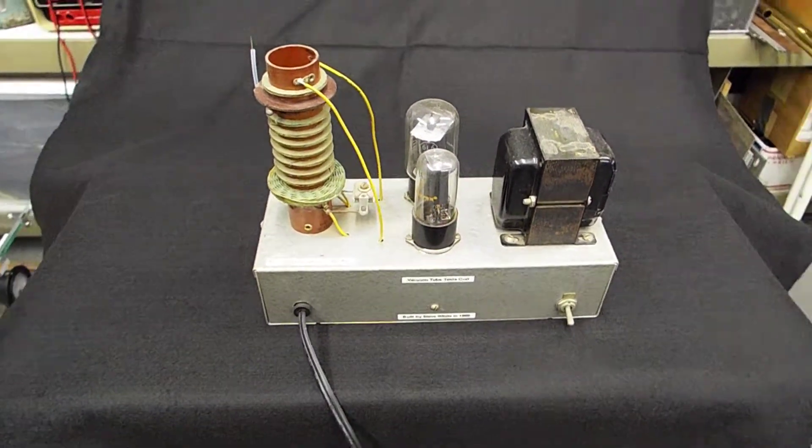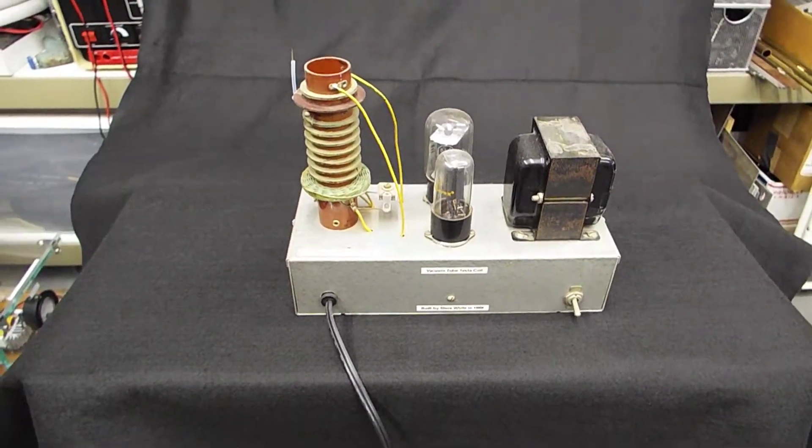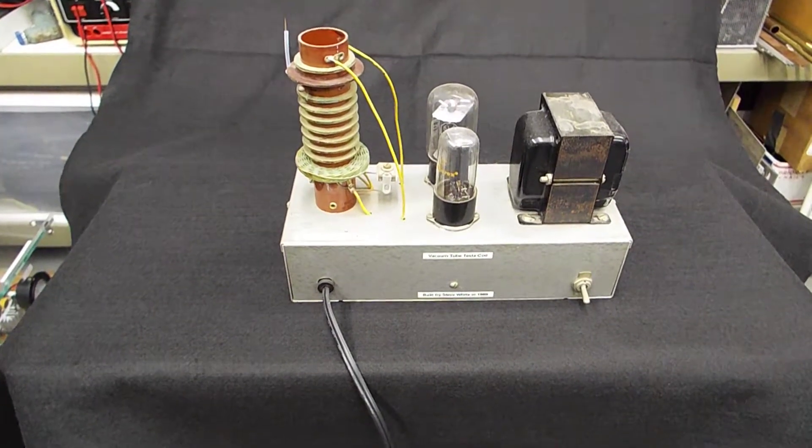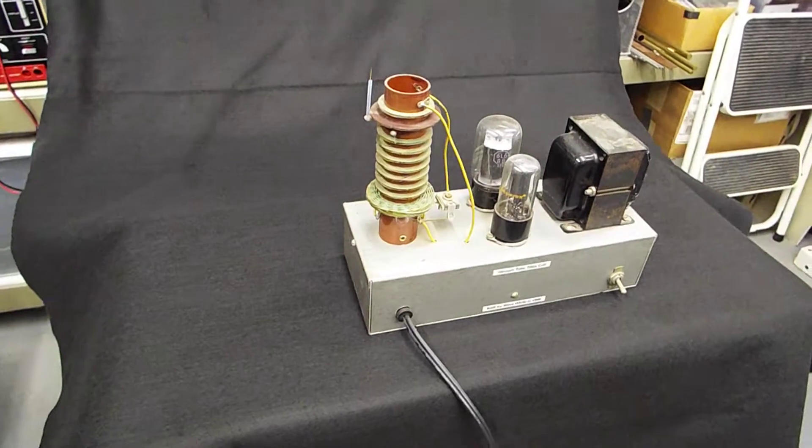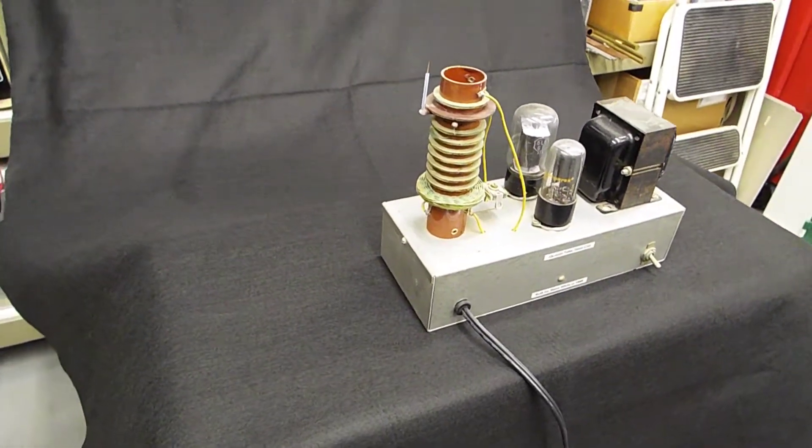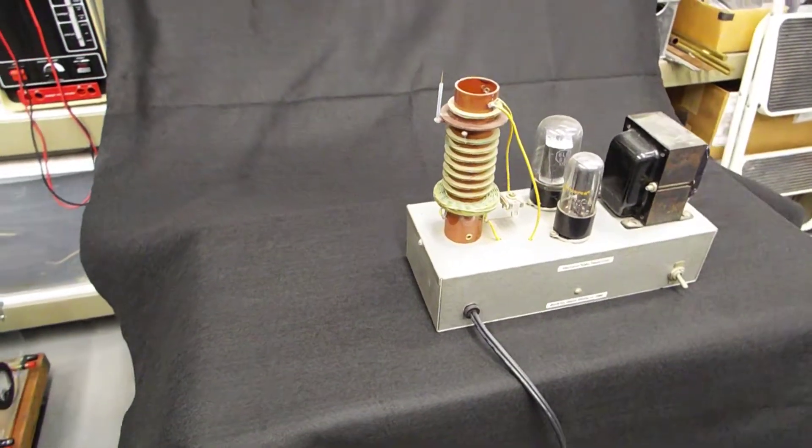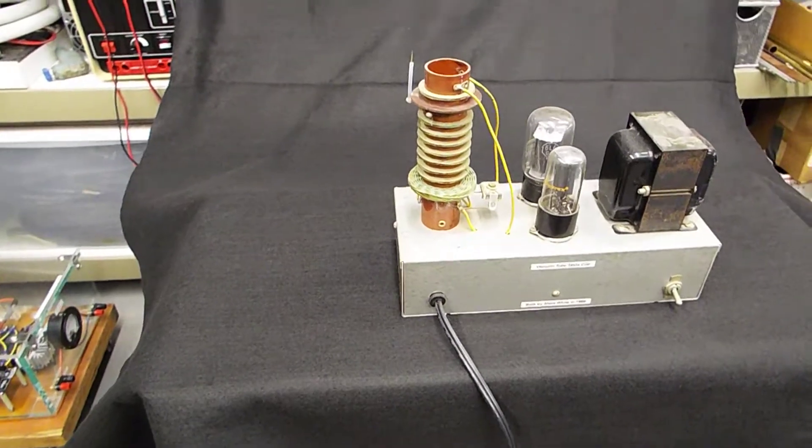This is an overview of my 6L6 vacuum tube Tesla coil. This device has a particular significance to me because this is the first Tesla coil I ever built, and I built it in 1969.